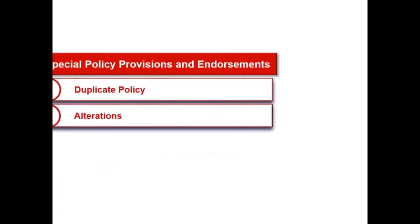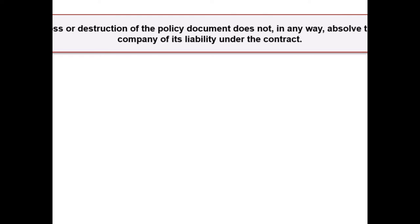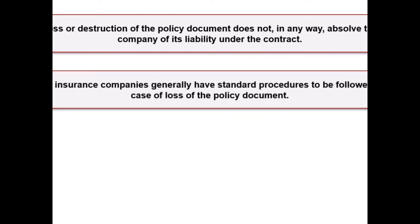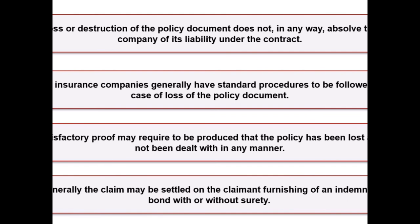In this next video of the lesson Documentation Policy Condition 2, we will learn about duplicate policy and alterations as parts of special policy provisions and endorsements. A life insurance policy document is only an evidence of a promise. Loss or destruction of the policy document does not in any way absolve the company of its liability under the contract. Life insurance companies generally have standard procedures to be followed in case of loss of the policy document. Normally the office would examine the case to see if there is any reason to doubt the alleged loss.